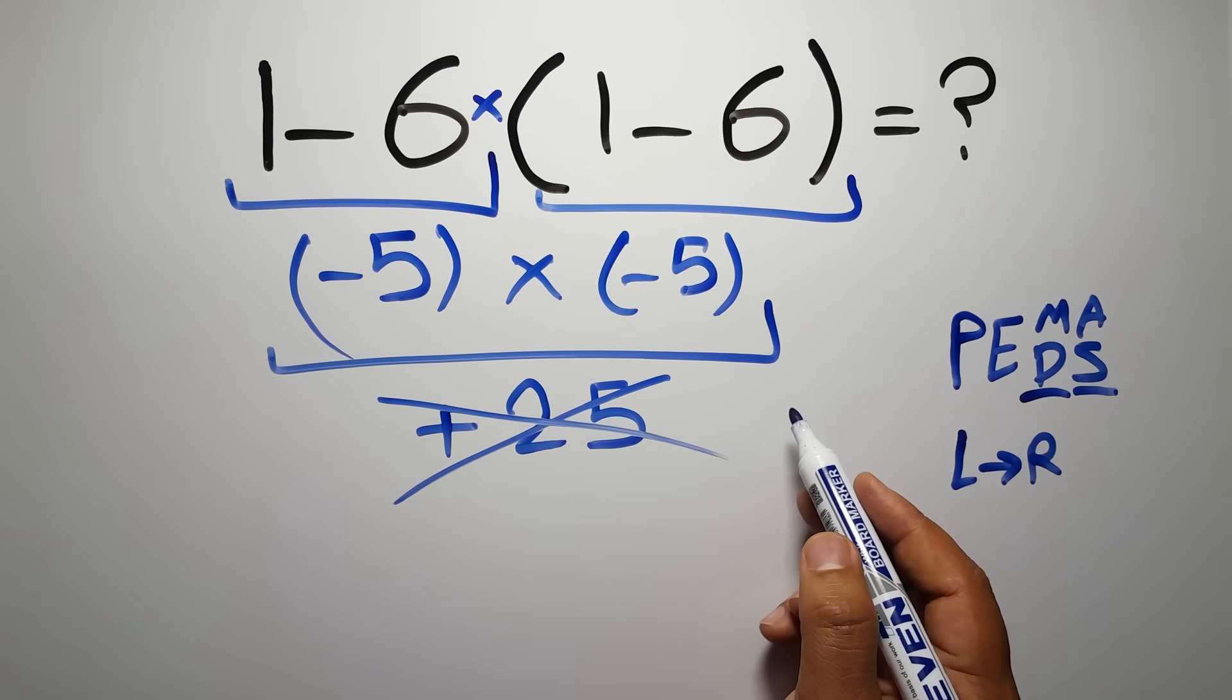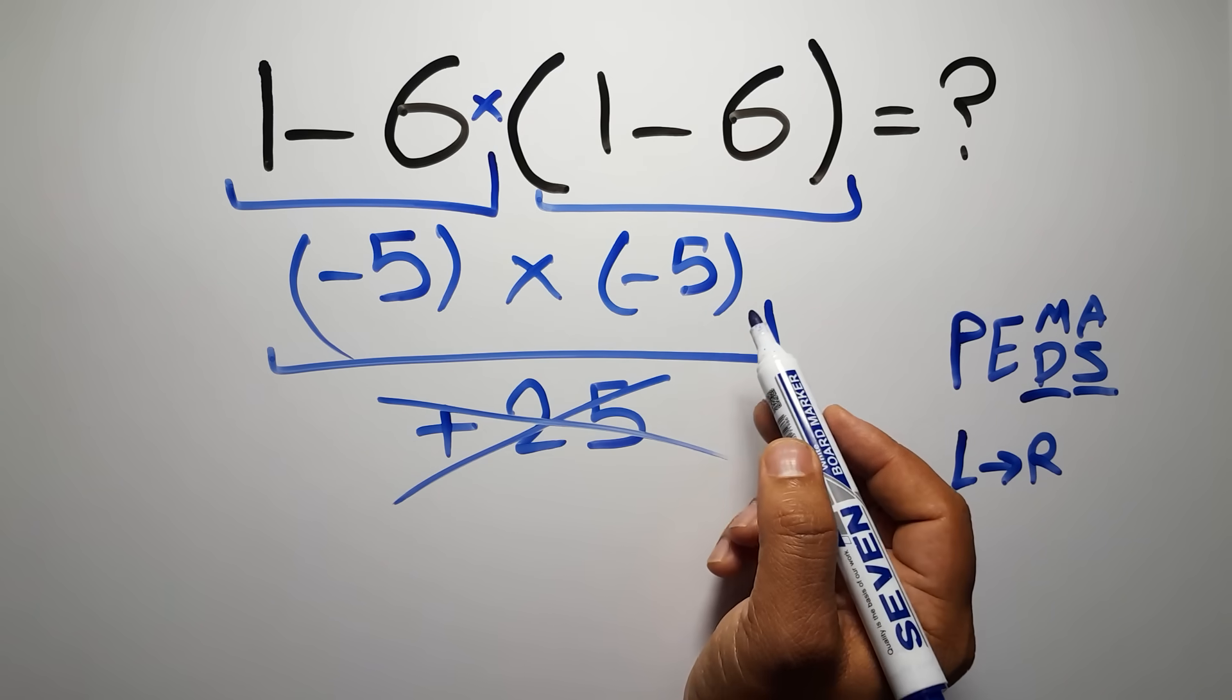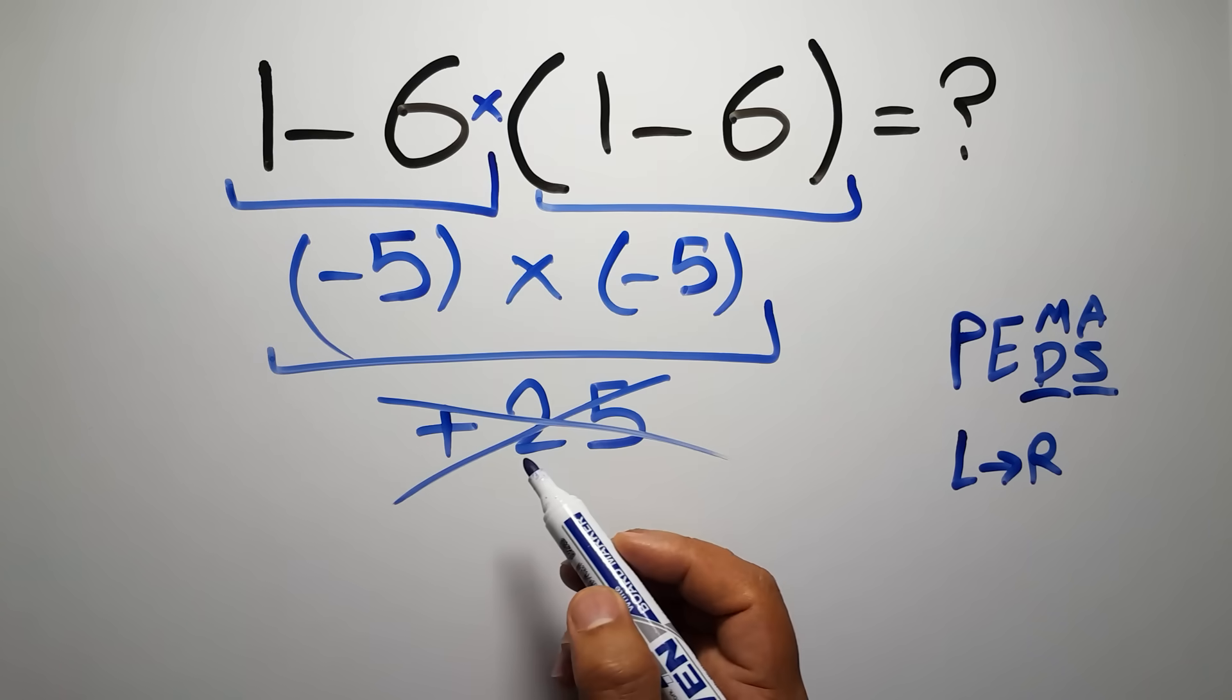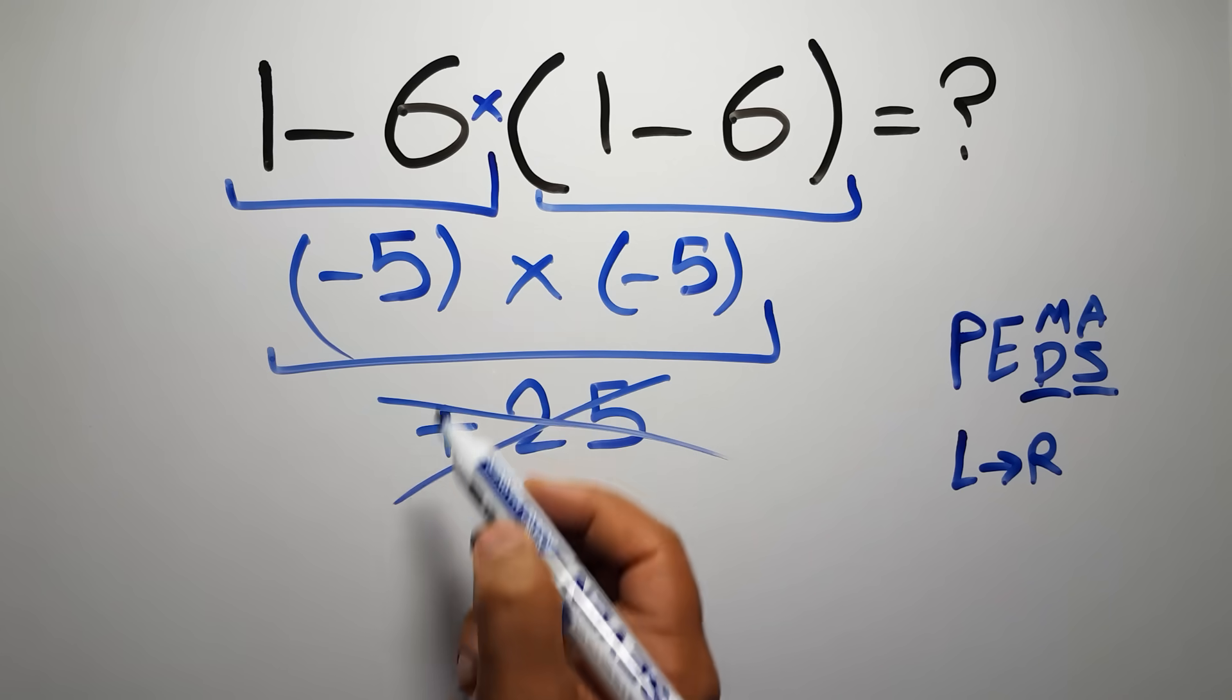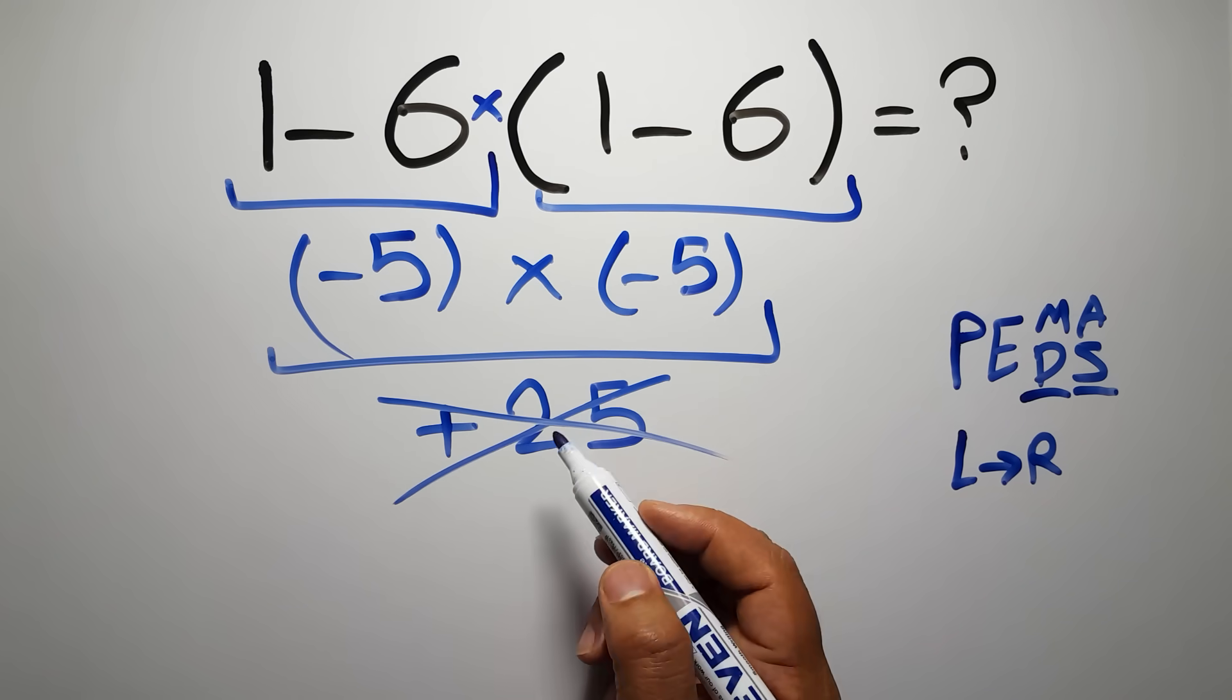So according to the PEMDAS, first we have to do this parentheses, then this multiplication, and finally this subtraction. If we do this subtraction before this multiplication or this parentheses, it is wrong.